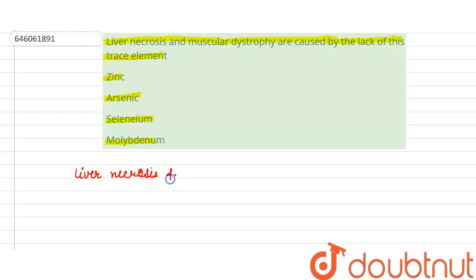So here we are talking about two diseases which are known as liver necrosis and muscular dystrophy. It is said that these diseases are caused by the lack of a trace element in the body. So first of all, we will learn what are trace elements.